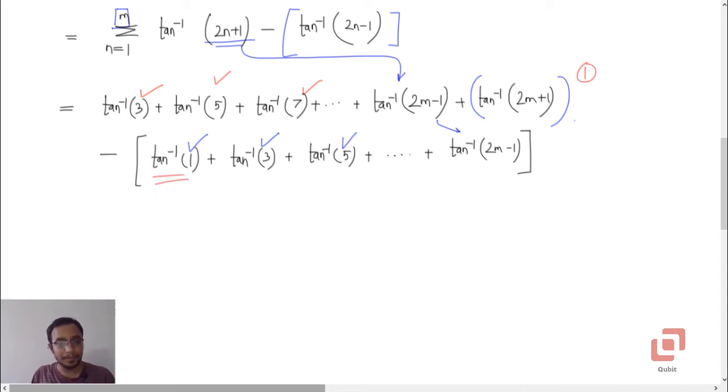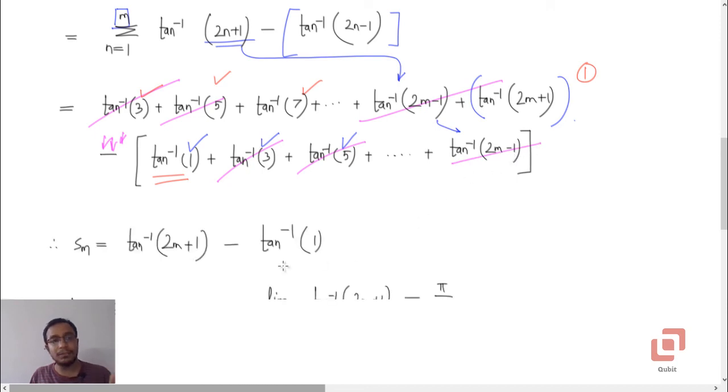Tan inverse of 3 minus tan inverse of 3, tan inverse of 5 minus tan inverse of 5, and so on, and even this term tan inverse of 2m minus 1 minus tan inverse of 2m minus 1. So what remains is tan inverse of 2m plus 1 minus tan inverse of 1. But this is sm, this is not the answer.